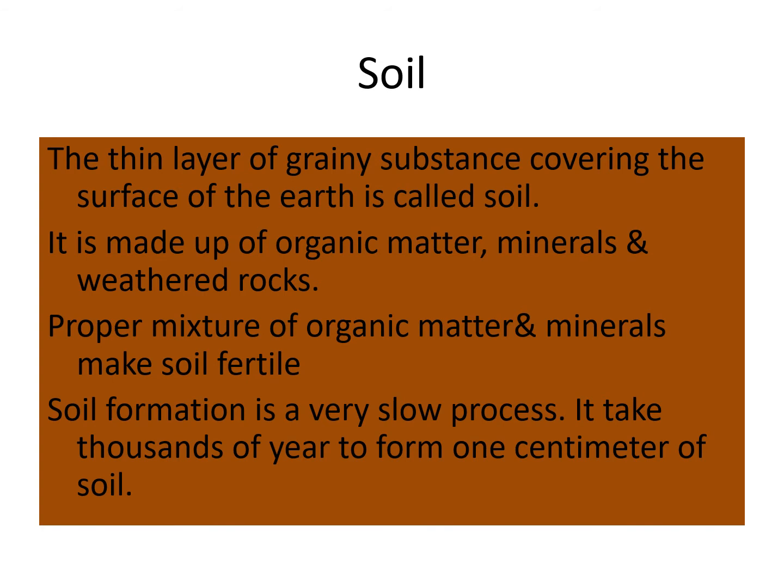Let's discuss one more natural resource, that is soil. The uppermost layer of the earth's surface which supports natural vegetation is referred to as soil. It is a thin layer of grainy substance covering the earth's surface. It is made up of organic matter — remnants of plants and animals, known as humus — which adds fertility to the soil, and minerals and weathered rock. Soil is formed by breaking up of rocks, and proper mixture of organic matter and minerals makes soil fertile. Soil formation is a very slow process; it takes 82,000 years to form 1 cm layer of soil.